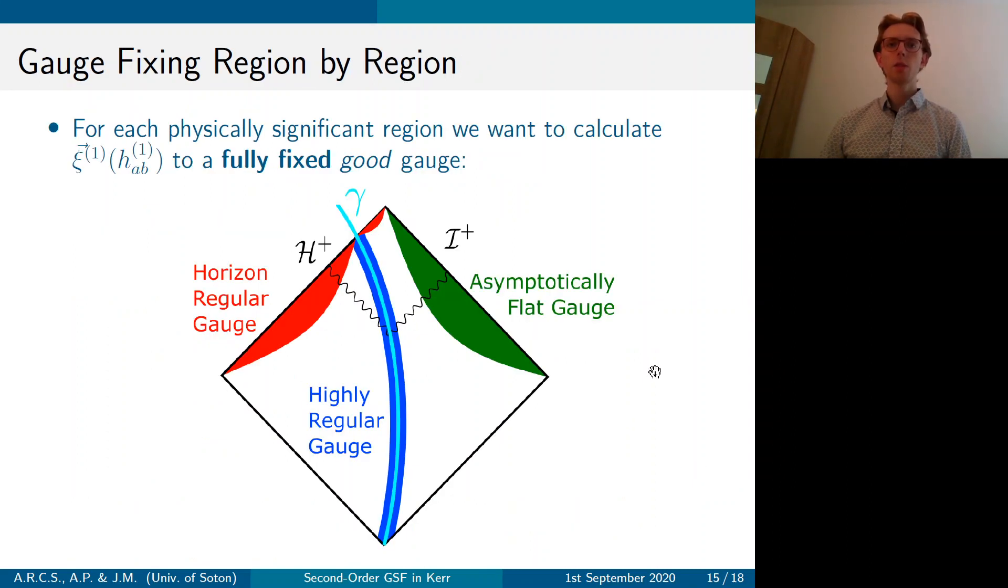So here we have a Penrose diagram depicting an EMRI as the compact object on this world line gamma falls into the supermassive black hole whose horizon is H+. And we've discussed already how near the world line we need to use a highly regular gauge to make our Teukolsky equation integrable. And so you want to fix to the highly regular gauge there.